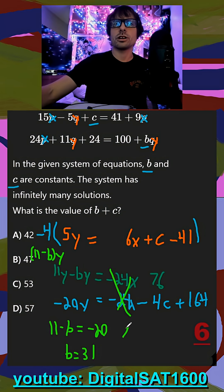For our second one, we set our y-intercepts equal to each other. So 76 equals negative 4c plus 164. Add 4c to the other side, subtract 76 from 164, and you get 88.